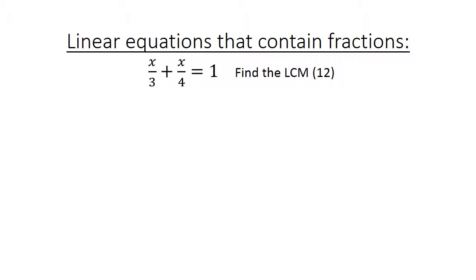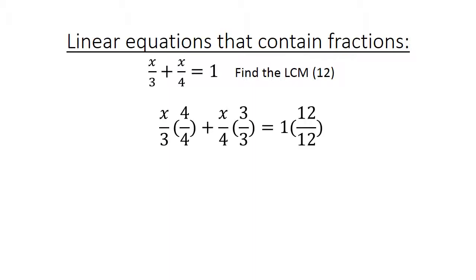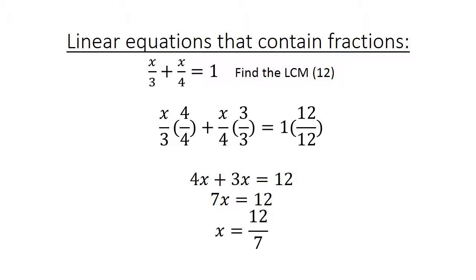Now we have x over 3 plus x over 4 equals 1. Find the lowest common multiple — it's 12. Multiply x over 3 by 4 over 4, and x over 4 by 3 over 3, then multiply through by 12. We get 4x plus 3x equals 12, so 7x equals 12, and x equals 12 over 7.